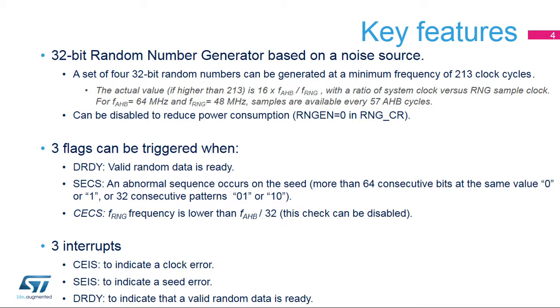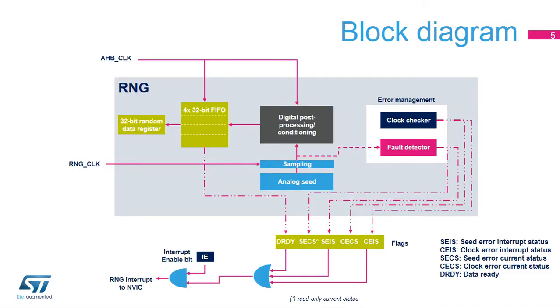An interrupt source can also be enabled to indicate an abnormal seed sequence or frequency error. This simplified block diagram of the RNG shows its basic functional and control modules.